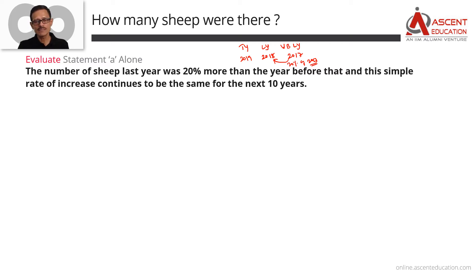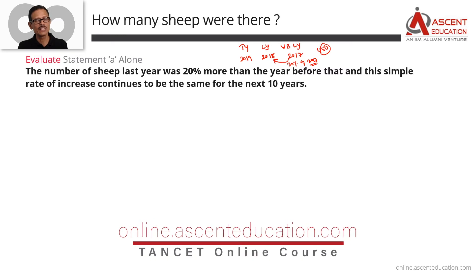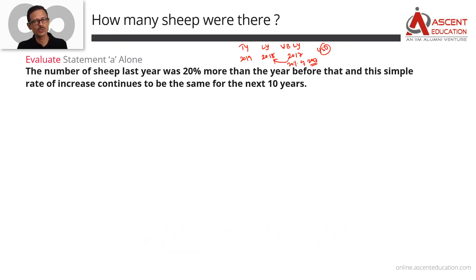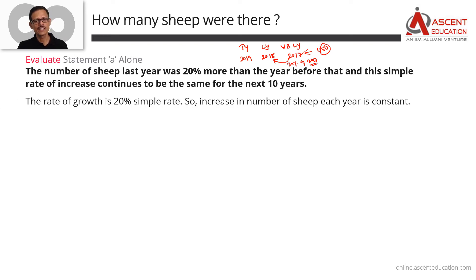The percentage rate of growth is the same, but since it's a simple rate of growth — not compound — the base is always 2017's number. This means the absolute increase in the number of sheep is the same constant amount year after year. So from Statement A: rate of growth is 20% simple rate, and the number of sheep increasing each year is a constant.